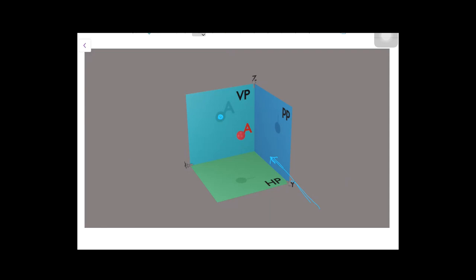The projection of a point will always be a point. If I have a 2D body or a 3D object, its projection will depend upon its orientation, but the projection of a point will always be a point. Its front view will be visible on the vertical plane and is represented by a small alphabet with a dash — that is, 'a dash'.